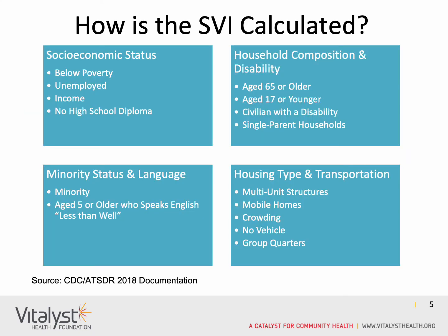It's also important to understand how the SVI is calculated. The CDC selected four factors to measure vulnerability in a community: socioeconomic status, household composition and disability, housing type and transportation, and minority status and language.